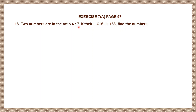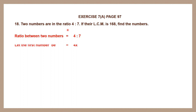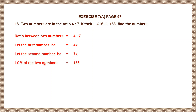We have been given the ratio of the numbers and their LCM, but not the actual numbers — we have to find what they are. The ratio between two numbers is 4 is to 7. So let the first number be 4x and the second number be 7x. LCM of the two numbers is given as 168.